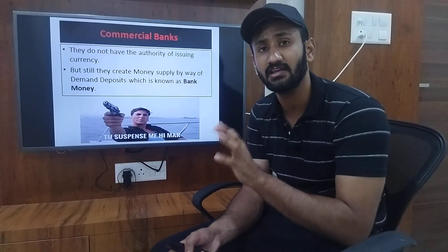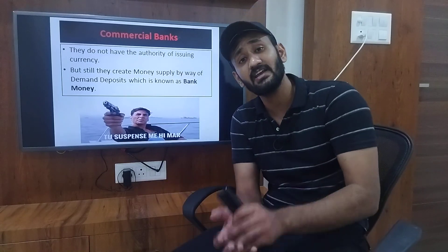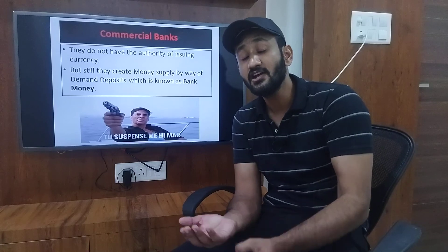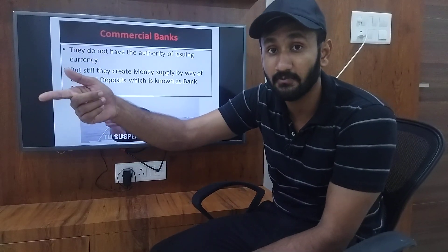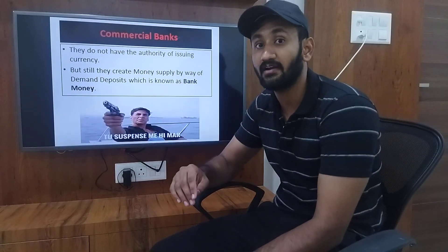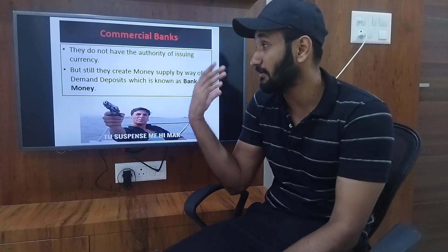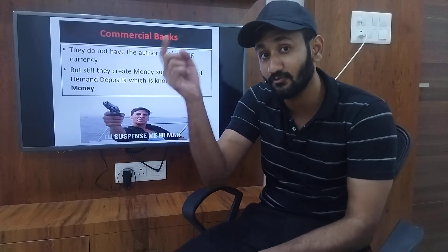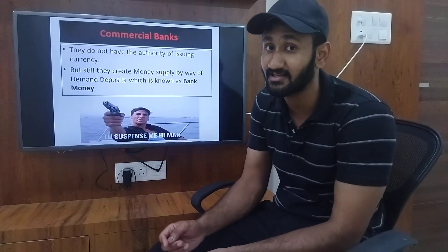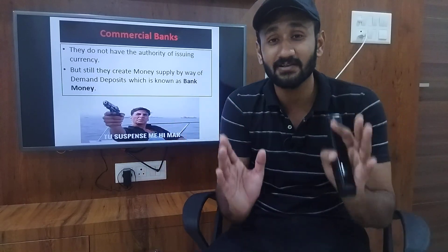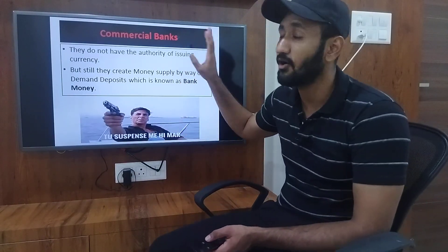Commercial banks like HDFC and ICICI cannot print bank notes — they don't have that authority. Then how do they supply money? They supply money on the basis of demand deposits — the money that you deposit in your bank. On the basis of that, they supply money, and that money is called bank money. How exactly they do that — without the authority to print notes they still double the money — that is the suspense we will solve in our next to next class, where we will also cover the money multiplier and CRR.